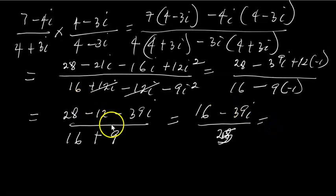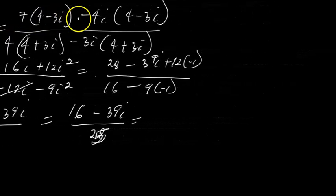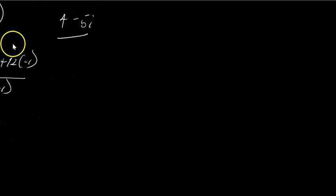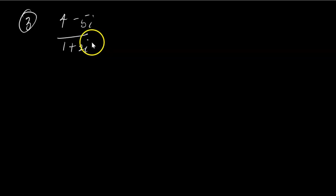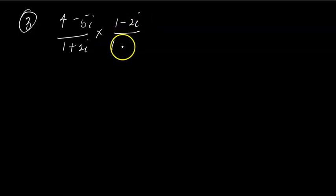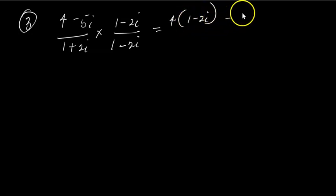Now let's take a final example. Our third example says (4 - 5i) / (1 + 2i). The conjugate of the denominator 1 + 2i is 1 - 2i. So we'll multiply both the numerator and the denominator by (1 - 2i).